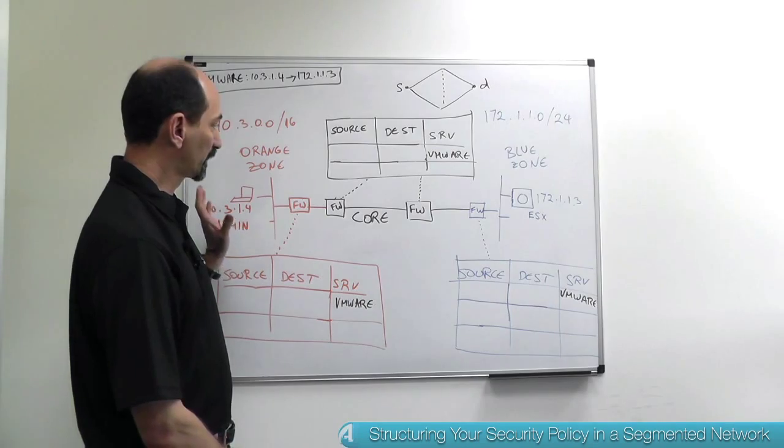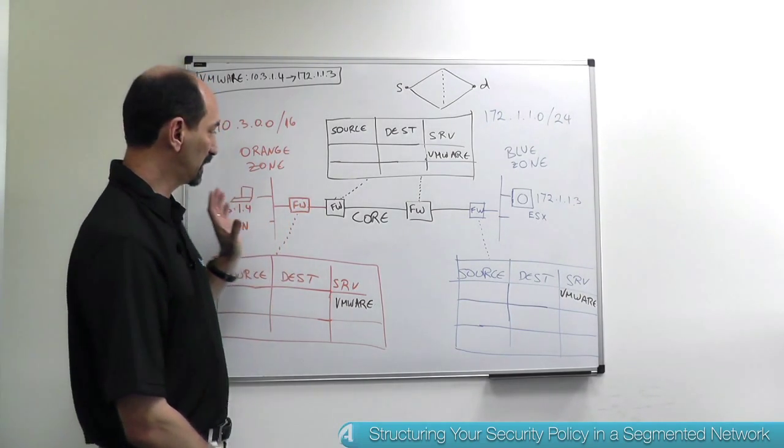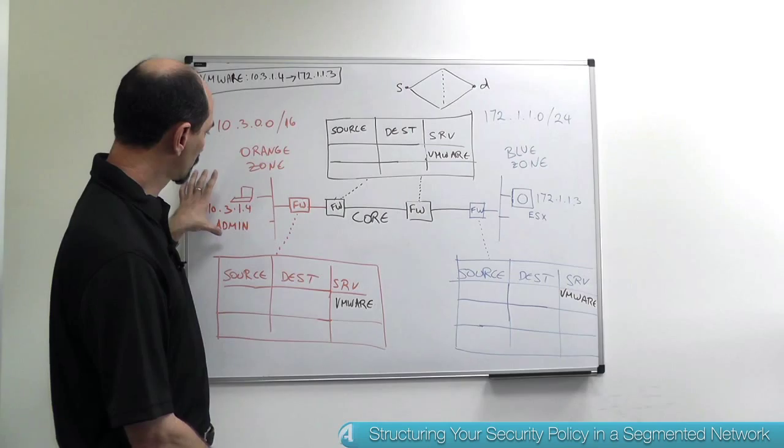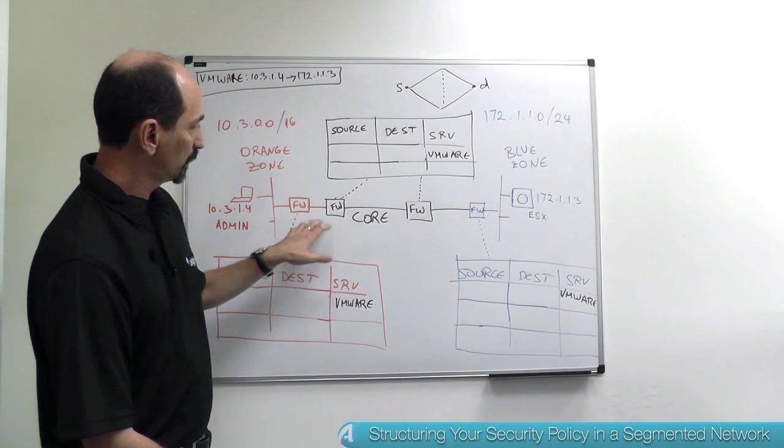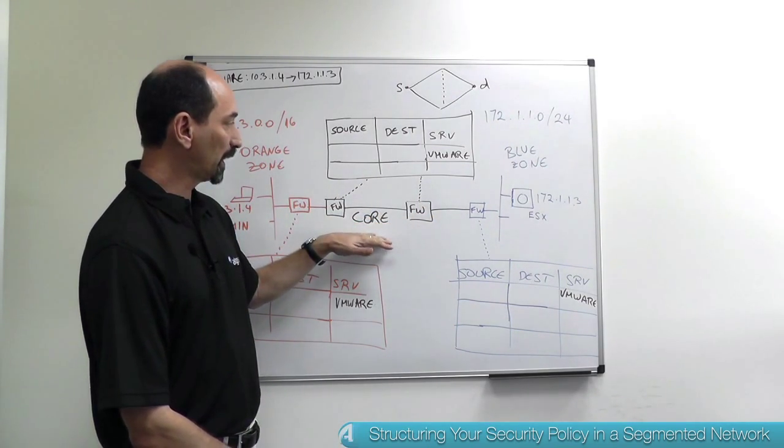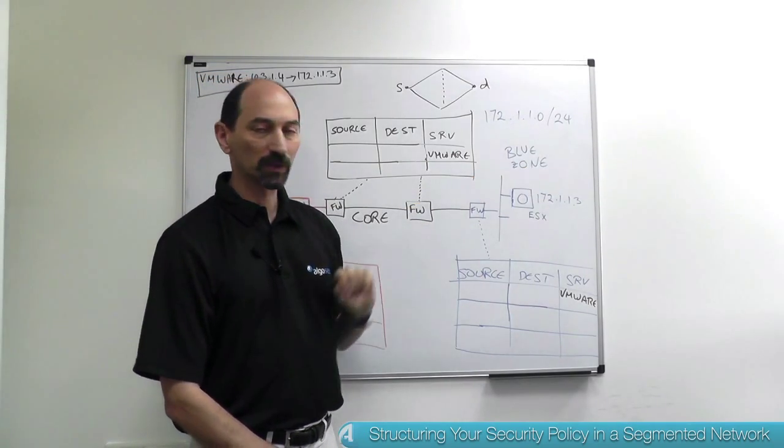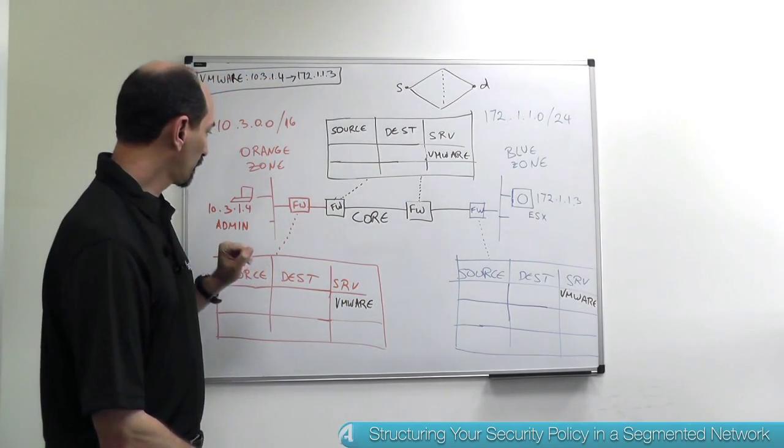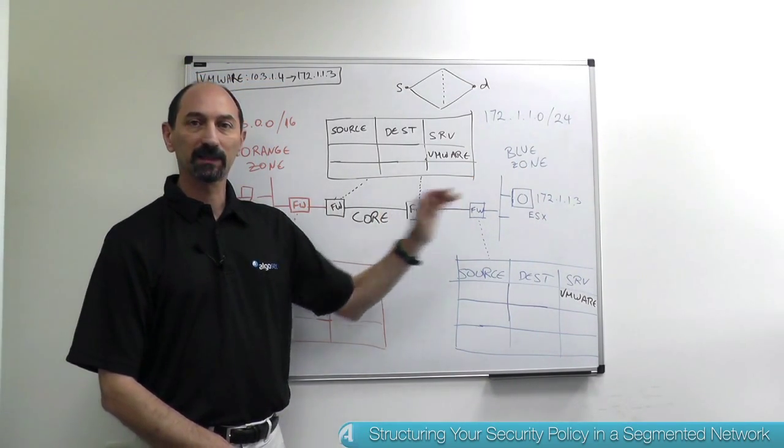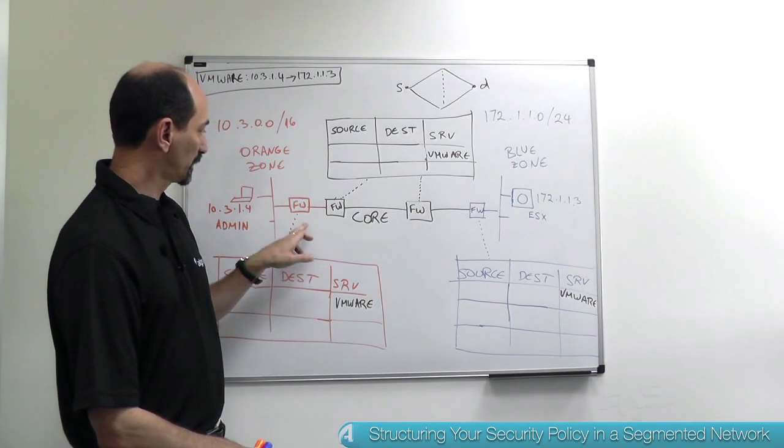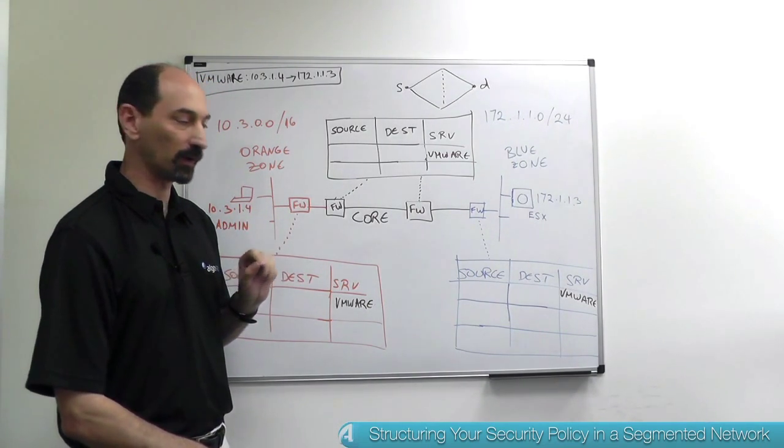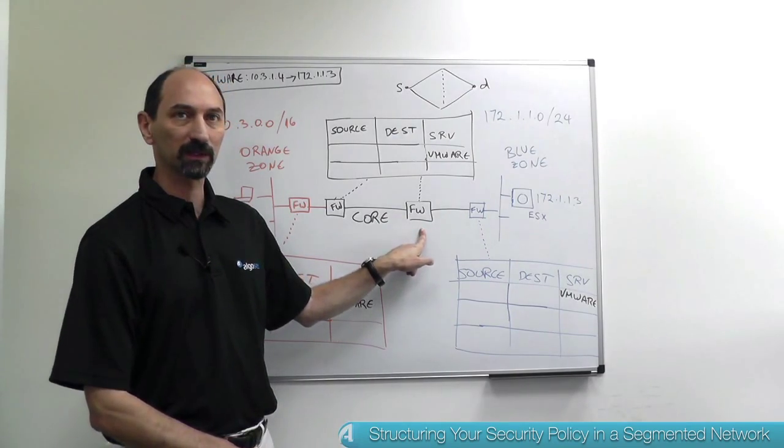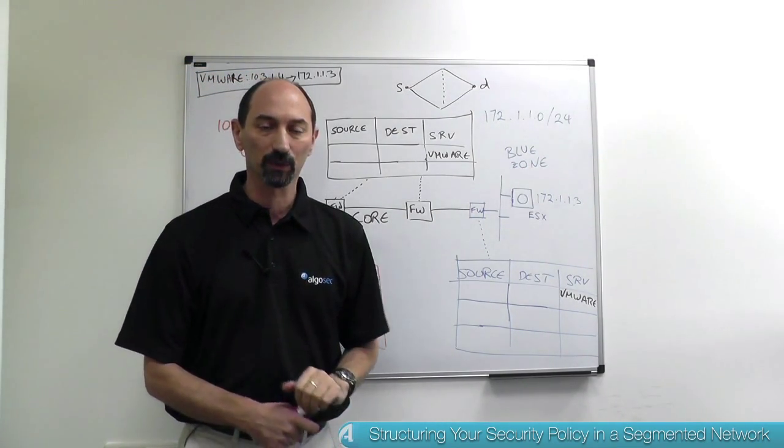Suppose you have a network that's segmented into three segments. You have your orange zone over here, then you have the core network in brown in the middle and you have the blue zone on the right, and there are firewalls protecting all of these zones from each other. So there's a firewall protecting the orange zone, there's a couple of firewalls protecting the core network and there's a blue firewall protecting the blue zone.